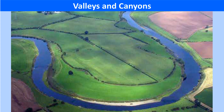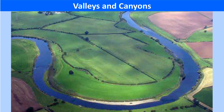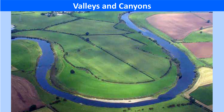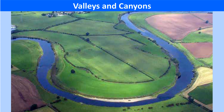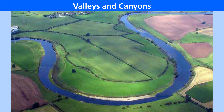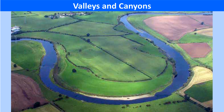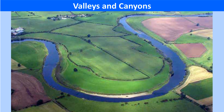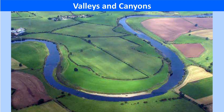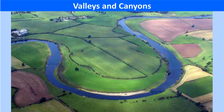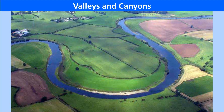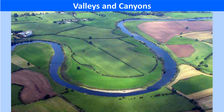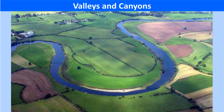During the middle course, the river performs the work of erosion, transportation as well as deposition. At times, meanders acquire a distinctly circular shape. While the river's outer banks get eroded more, forming river cliffs, deposition occurs on the inner bank.